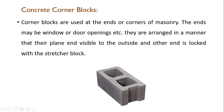Next is the concrete corner block. Corner blocks are used at the ends of corners of masonry — the ends may be window or door openings. They are arranged so that their plain end is visible to the outside, and the other end is locked with the stretcher block.